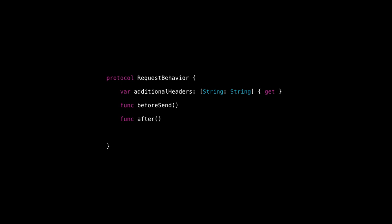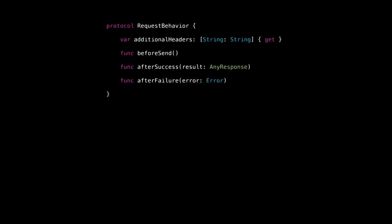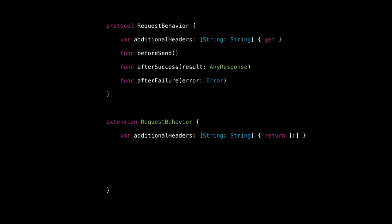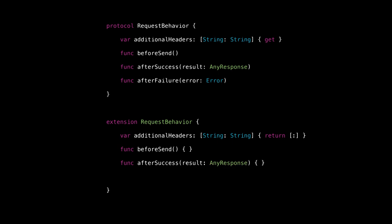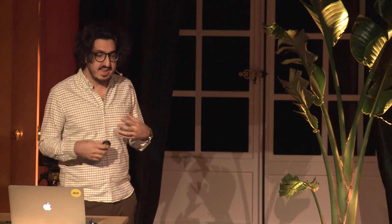Add headers requires knowledge about the URL request, and we don't really want that, so let's make it a computed property — just a dictionary of string to string. 'Before' is also not a very good name, so let's call it 'before send.' 'After' similarly has a naming problem, and there are two ways a request can end — success and failure — so we should split that into two different methods. In Swift, you can extend a protocol and add concrete implementations. All four components have nice defaults: no additional headers, do nothing on before send, do nothing on after success or after failure.